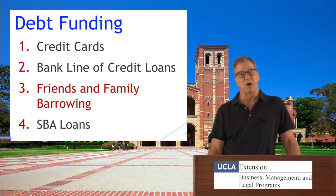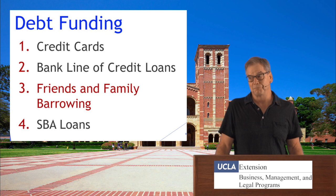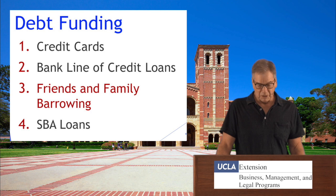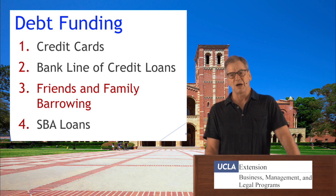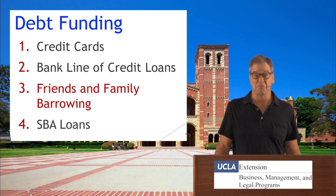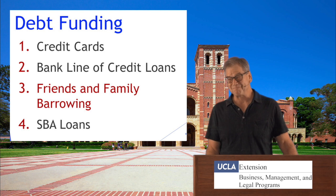Next is friends and family borrowing, where you're loaned money from your parents, immediate family, or advisory board members. The caution here is to be careful about approaching friends and family for money because sometimes you can take a really valuable, loving, caring relationship and when you get money mixed into it, things don't always work out well.